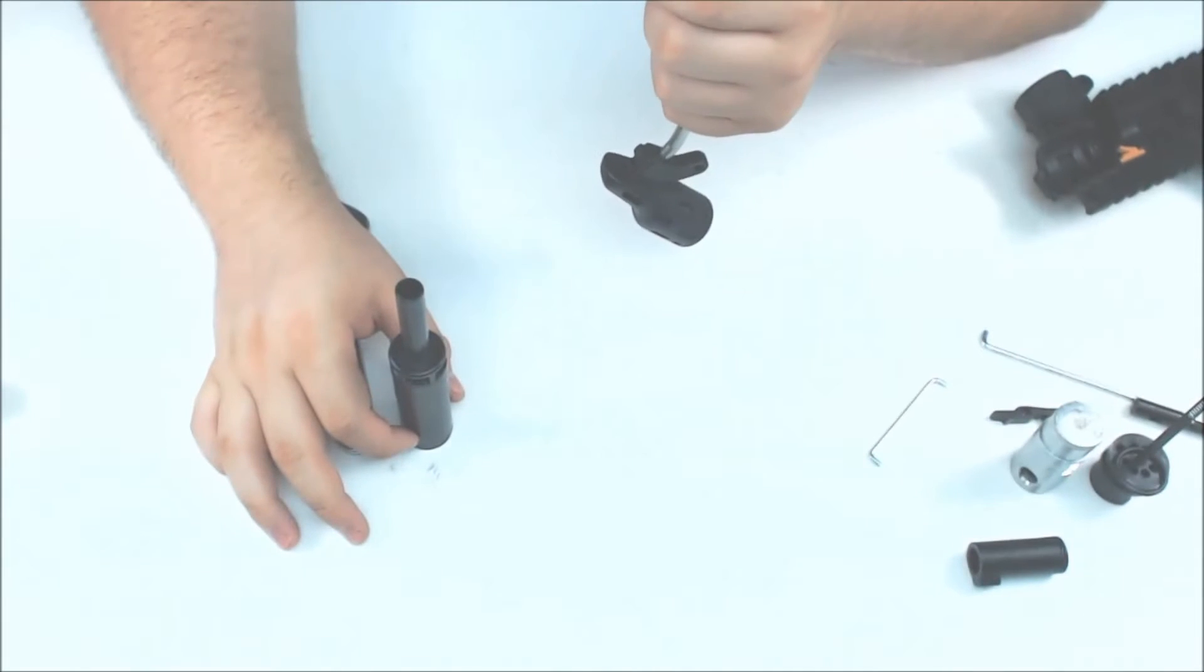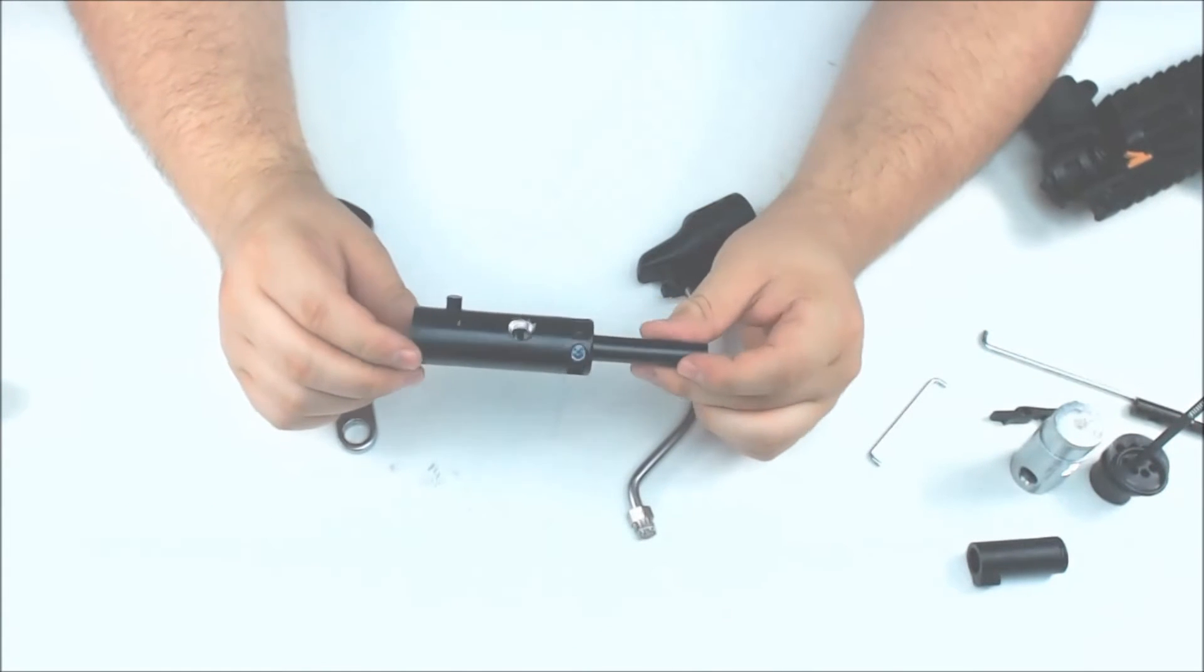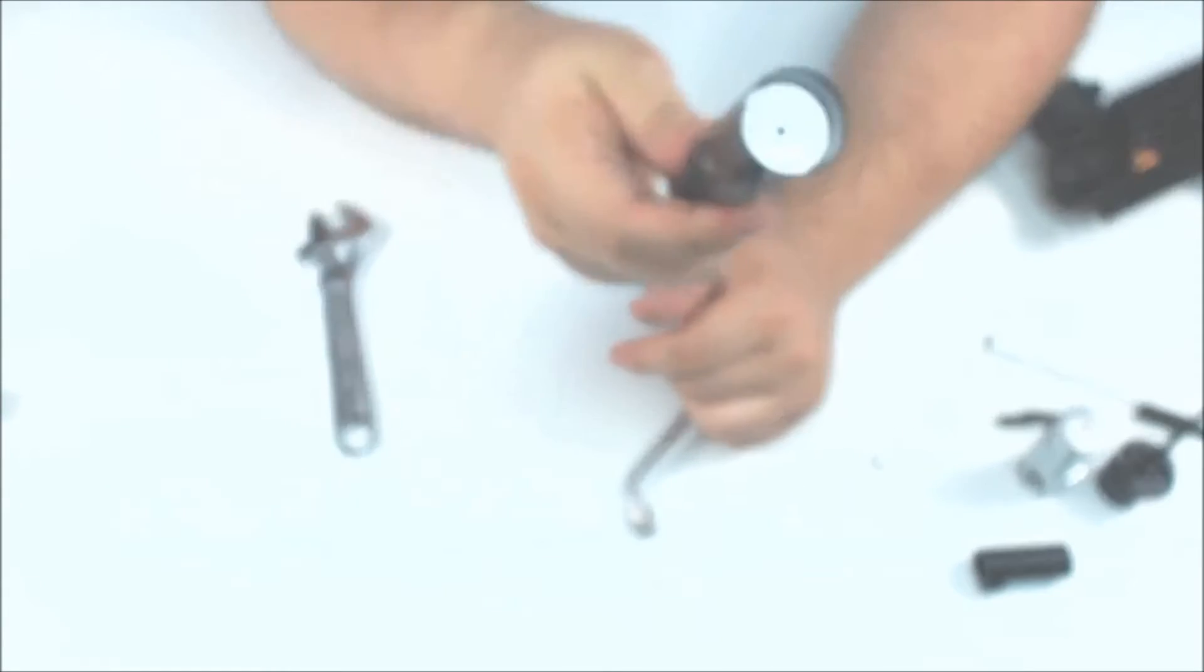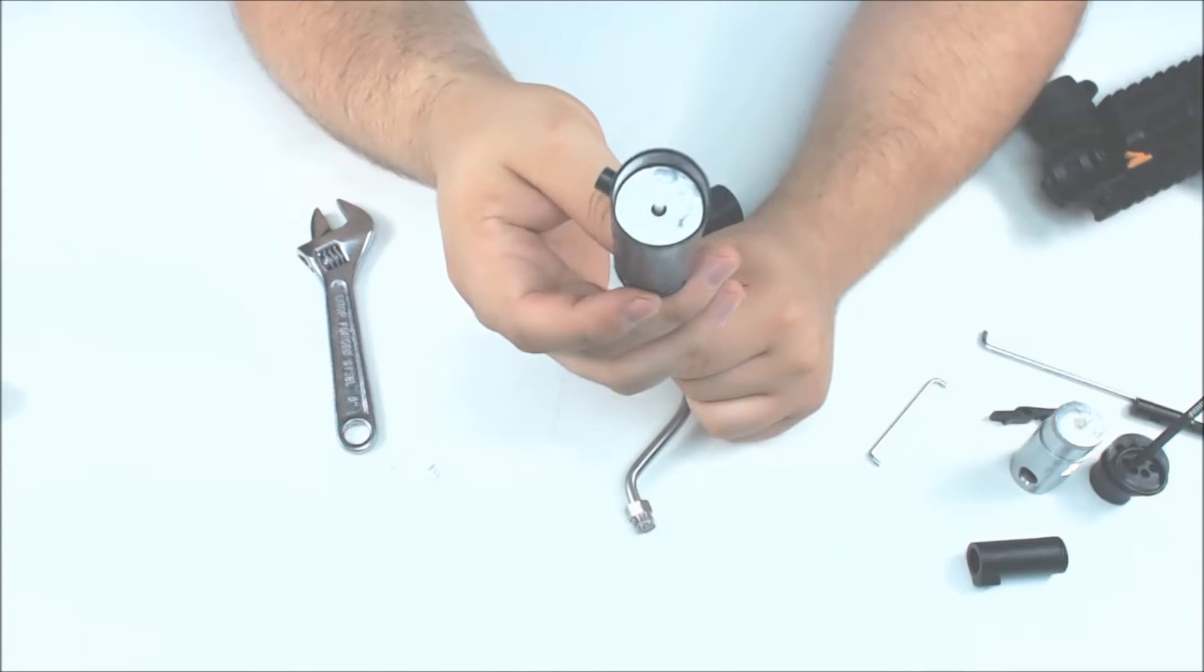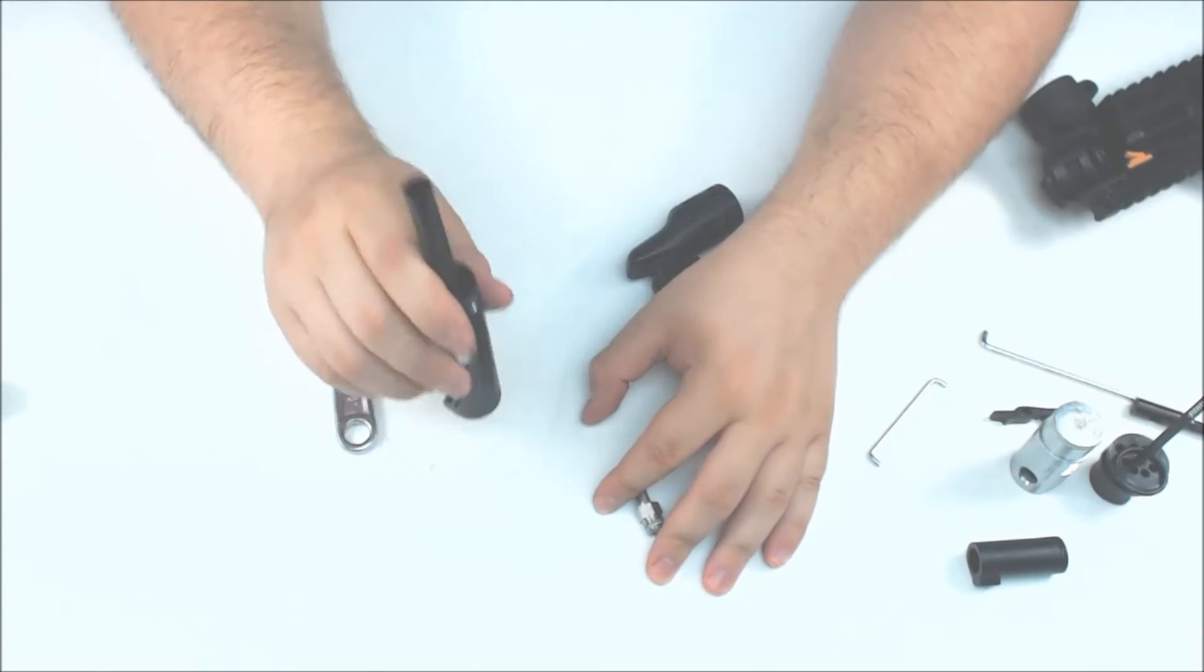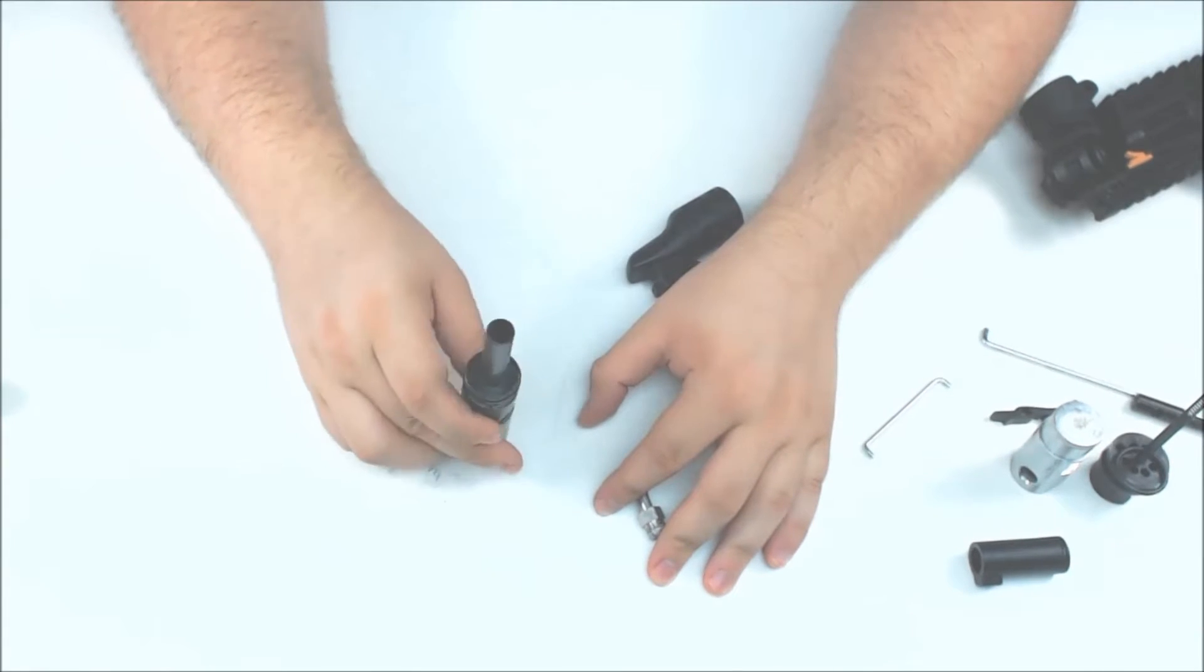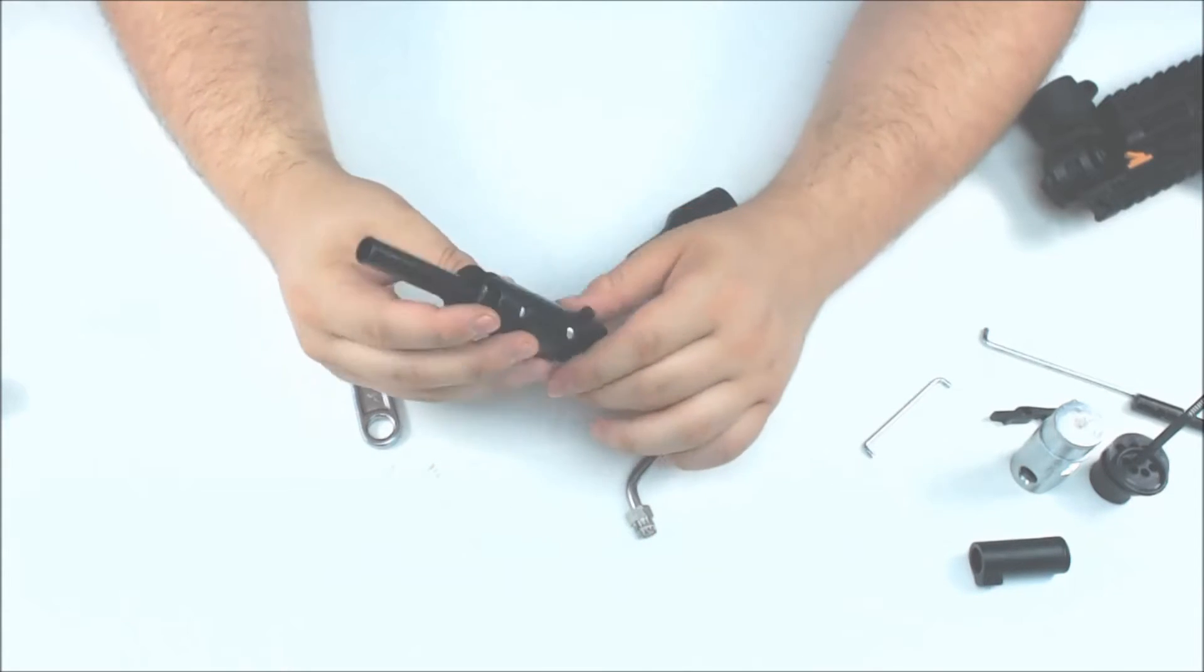So now we have our air transfer tube and our ASA right there and the power tube with the valve, which is the silver piece inside of it. Now to get the valve out, you're going to need to put it on a table or something of the sort and kind of loosen it. As you can see, they come out pretty easy.